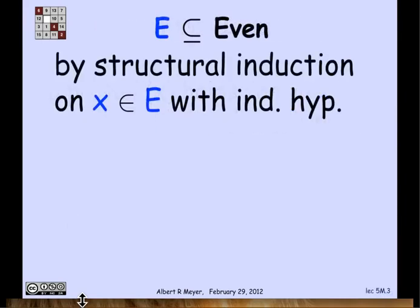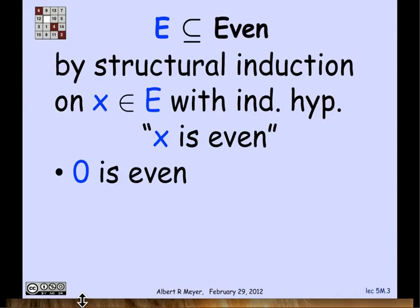Let's do an easy example first. This is one we've actually seen when we argued that the set E that was recursively defined in the last presentation contained only even numbers. So remember the definition of E was that 0 is in E. And we're going to be proving that x is even by induction. We need to check the base case - yes, 0 is even.